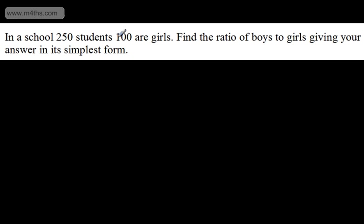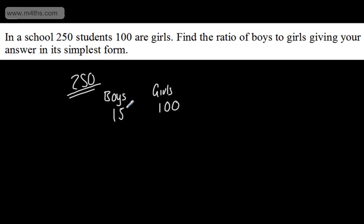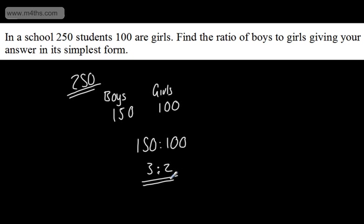It says: in a school, 250 students — 100 are girls. Find the ratio of boys to girls, giving your answer in its simplest form. So there are 250 students total and 100 girls, which means boys are 250 minus 100, giving 150 boys. So the ratio of boys to girls would be 150 to 100. We can divide each by 50, giving a three to two ratio. If it was girls to boys, it would be two to three — so do check the wording of the question.